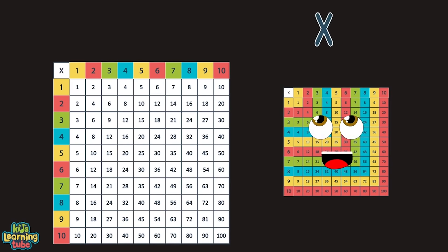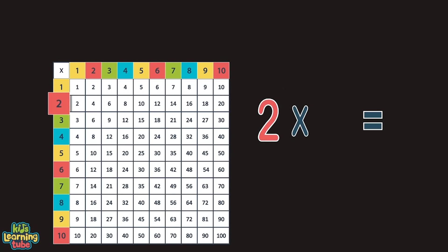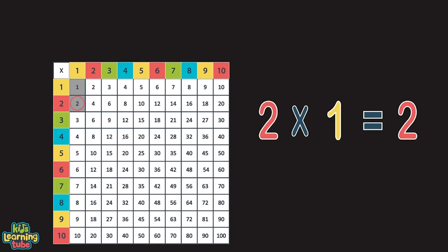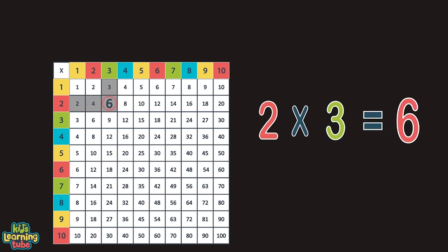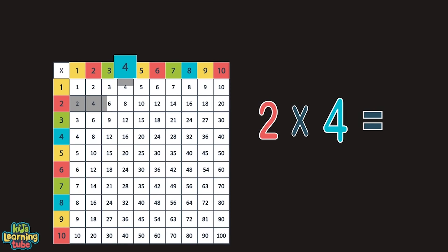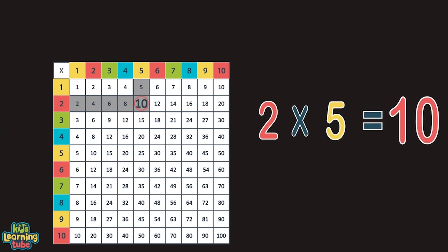Any time you multiply any number by two, you just double that number and the equation is through. For example, two times one does equal two. And two times two equals four, this is true. Two times three does equal six. And two times four equals eight in this mix. Two times five will always equal ten.